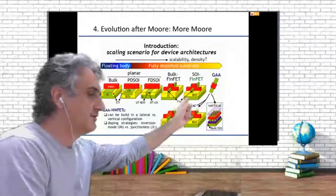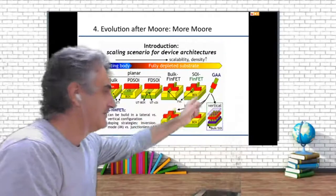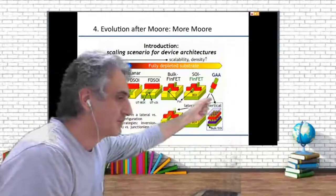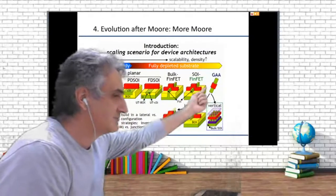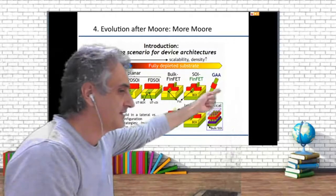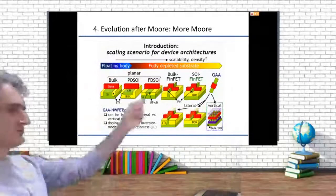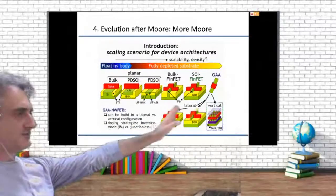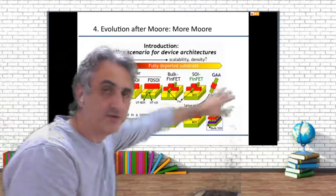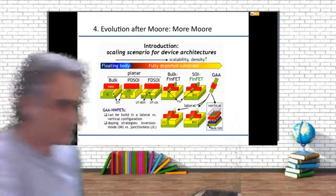From FinFET, the obvious evolution is the gate-all-around transistor — drain and source with the gate all around the transistor — in lateral, vertical, and 3D varieties. This is what we will be using for the next maybe 10 years. Then they are planning 3D stacking: putting one layer over the other doubles the density. This has some power dissipation challenges, but those can be resolved. 3D integration has already been done by Intel and others for flash memory.